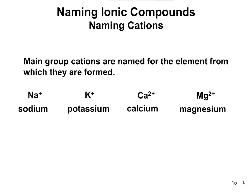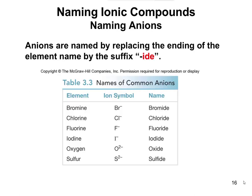For naming ionic compounds, we name the cation first, then the anion. For naming the cation, you just say the element name: Na⁺ is sodium, K⁺ is potassium, and so on for calcium and magnesium. For the anions, the suffix gets changed to -ide. So bromine becomes bromide, chlorine becomes chloride, oxygen becomes oxide, sulfur becomes sulfide, and so forth.